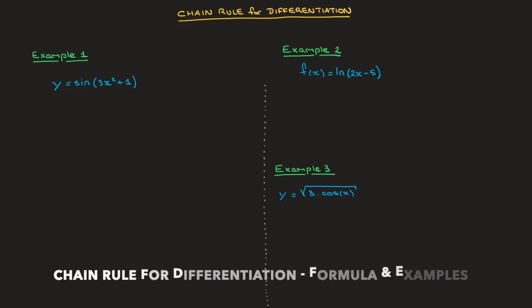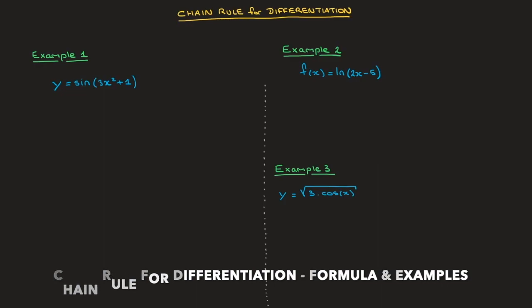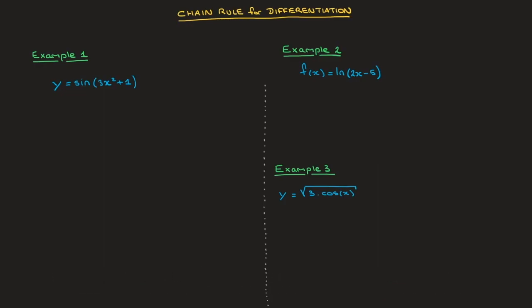Hi everyone. We now learn about the chain rule for differentiation, which is the method we use to differentiate composite functions. To learn it, we're going to work through the three examples that we see here.